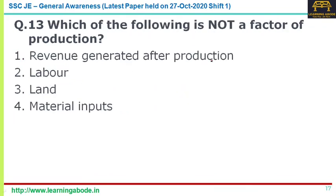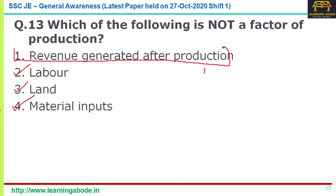Question number thirteen: which of the following is not a factor of production? Factor of production means input needed for the creation of goods or services. Options given are revenue generated after production, labor, land, and material inputs. Since Adam Smith and Karl Marx, economists have cited land, labor, and capital — including entrepreneurship — as factors. Material inputs is also a factor, whereas revenue generated after production is not. Answer is option one.